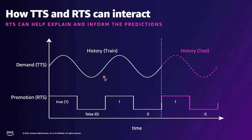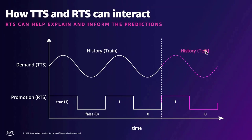You bring all your data from history up to the current period, and Amazon Forecast will split it into a train set and a test set. The data model is built against the training set and then inference or predictions are made against the test set. Since the ground truth is already known, this is how Amazon Forecast benchmarks and demonstrates accuracy metrics against known datasets.